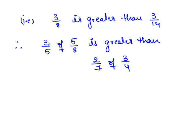Therefore, 3 by 5 of 5 by 8 is greater than 2 by 7 of 3 by 4.